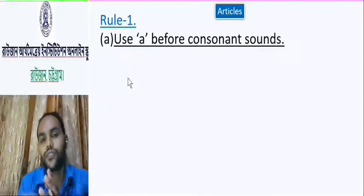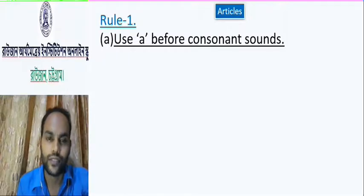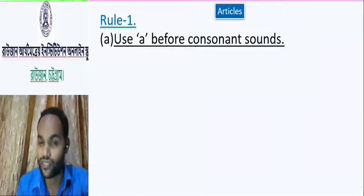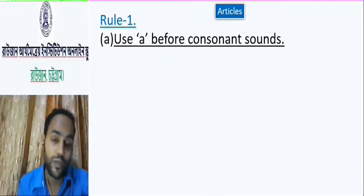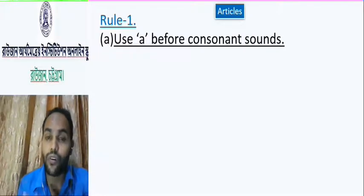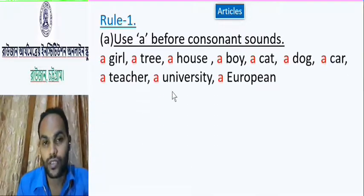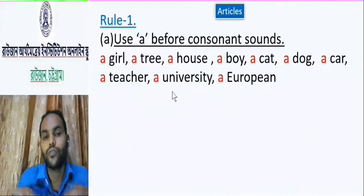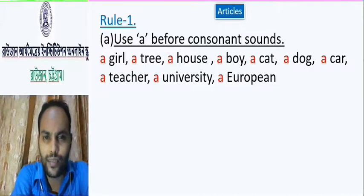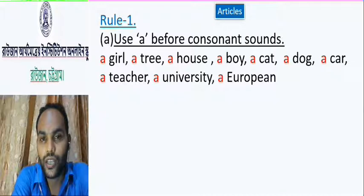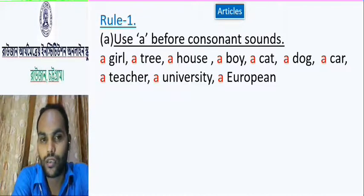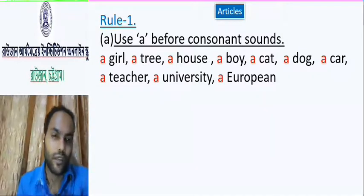Rule number one: Use 'a' before consonant sounds. Remember, rule number one — use 'a' before consonant sounds. Here we can see some words: girl, tree, house, boy, cat, dog, teacher, university, European.